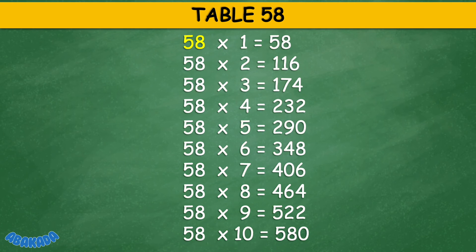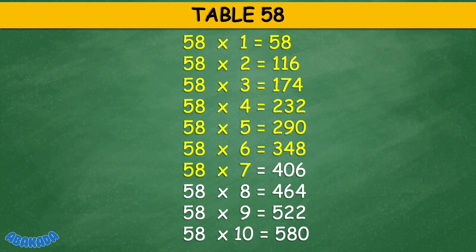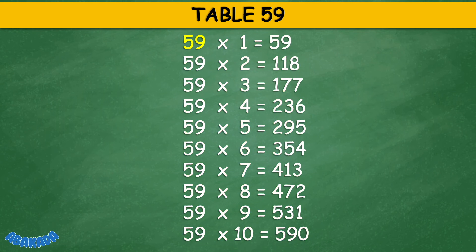Table 58: 58 times 1 equals 58, 58 times 2 equals 116, 58 times 3 equals 174, 58 times 4 equals 232, 58 times 5 equals 290, 58 times 6 equals 348, 58 times 7 equals 406, 58 times 8 equals 464, 58 times 9 equals 522, 58 times 10 equals 580.